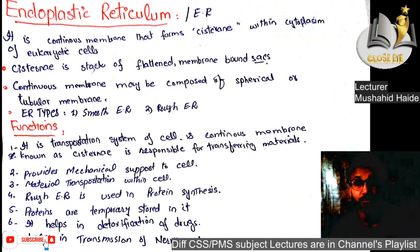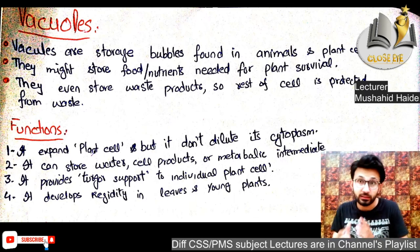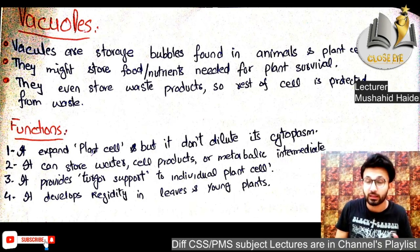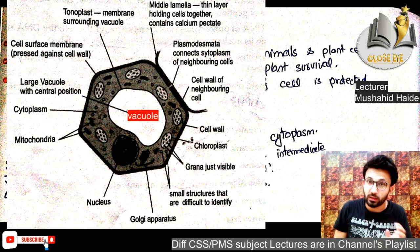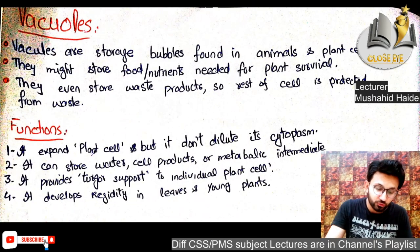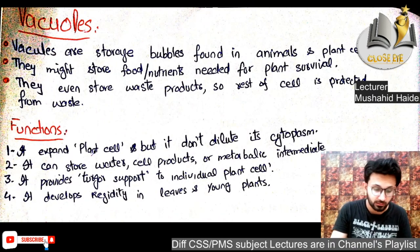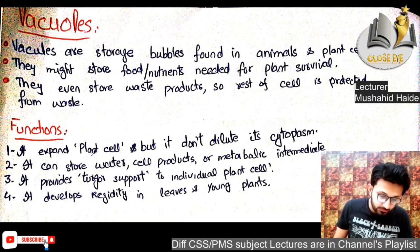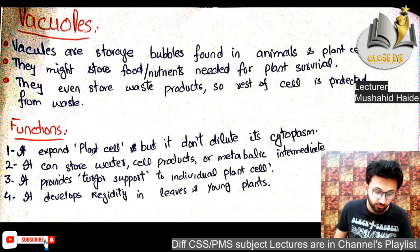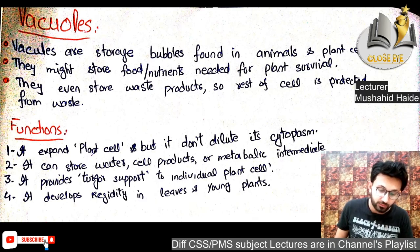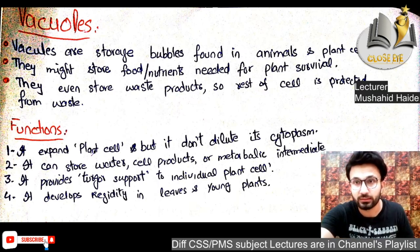Vacuoles are also organelles found in animal and plant cells. They are storage bubbles used for storing energy and waste. They are especially important in plant cells. Functions: they expand plant cells without diluting their cytoplasm, store water, protect the cell, store metabolic intermediates, and provide turgor support to individual plants.